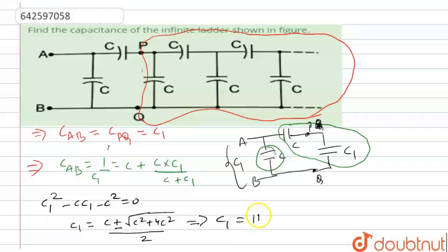So this is the desired capacitance, the net capacitance along AB. Hope you understand, thank you.